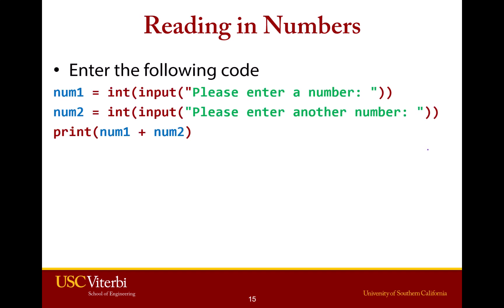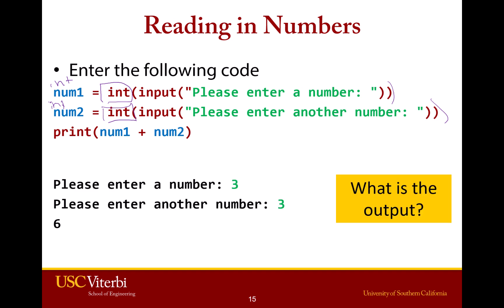Basically, whenever you're asking a user for a number, all you have to do is put int in front of the input command — int(input('...')), with a closing parenthesis at the end. If you do that, num1 and num2 are both integers. When you add them together, you get 6, which is exactly what you would expect.